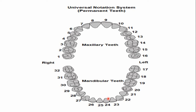In the universal numbering system, starting with 1 and going clockwise, it ends at 16 in the upper arch and 32 in the mandibular arch. The left mandibular canine is number 22 and the right mandibular canine is number 27.